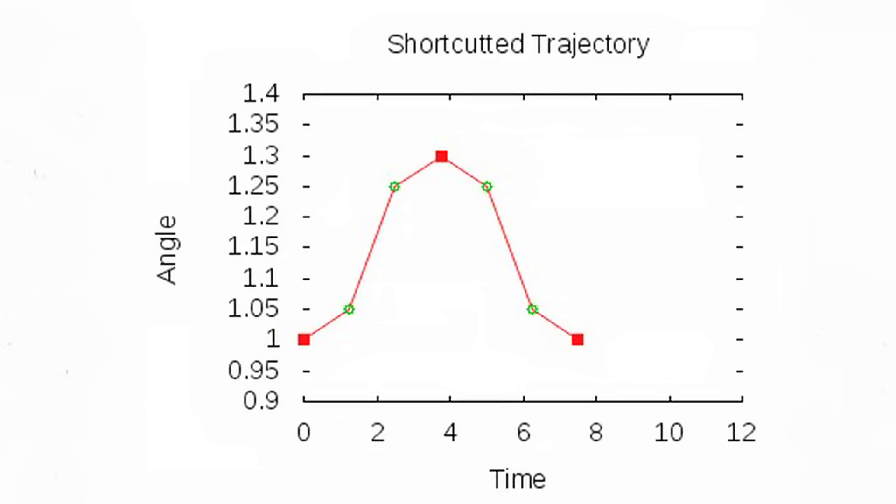Unlike the short cutter, the smoother does not modify the locations of points within the trajectory. The smoother simply changes the timing intervals between points to enforce dynamic constraints.